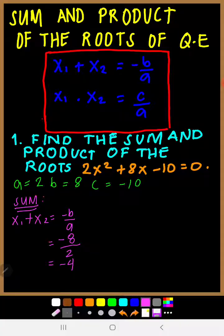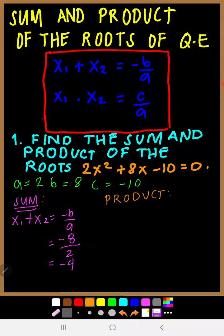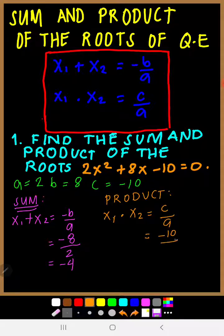For the product, the formula is x sub 1 times x sub 2 equals c over a. Our c is negative 10 and our a is 2. Therefore, the product of the roots of the quadratic equation 2x squared plus 8x minus 10 equals 0 is negative 5.